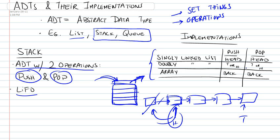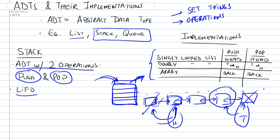With the doubly linked list, you could do the same thing, but you could also do it from the back. The problem with doing it from the back with a singly linked list is that if you were to remove this element, then you would have to walk through all the other elements just to find the second to last one so that you can move your tail to it. So that's why it's not advisable to pop and push from the tail using a singly linked list. But with a doubly linked list, you could do that — so you could use either the tail or the head.